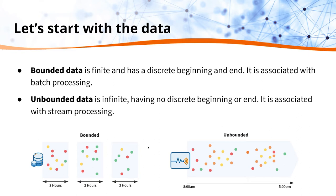Bounded data is finite — it has a discrete beginning and end. This is essentially any data that you store in a transactional database, and it's associated with batch processing. An example would be point of sale data in a shop. Whenever you make a purchase, that data is stored in a database, and then maybe at the end of the day, end of the week, or even quarterly, a batch process will run against that database and generate reports for stakeholders to review.